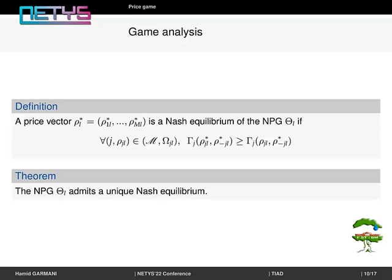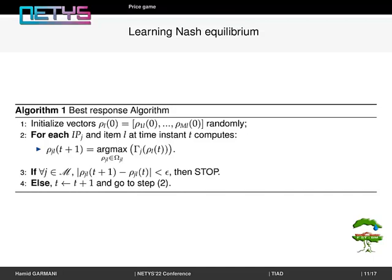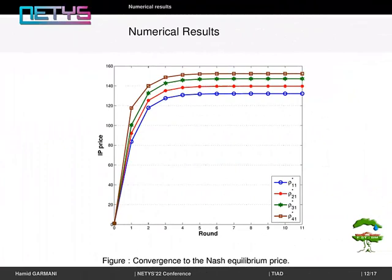Game analysis. In this stage of work, we define Nash equilibrium price for non-cooperative price game and we prove the existence and uniqueness of Nash equilibrium. Learning Nash equilibrium: this algorithm summarizes the different steps to learn Nash equilibrium price of the non-cooperative price game.